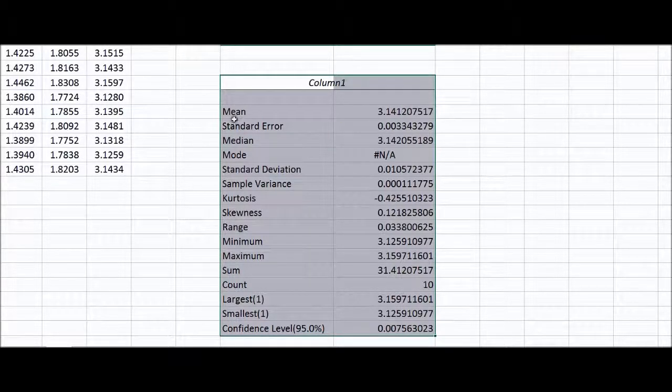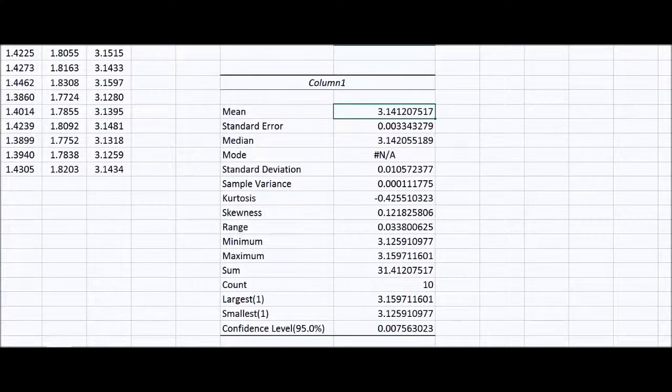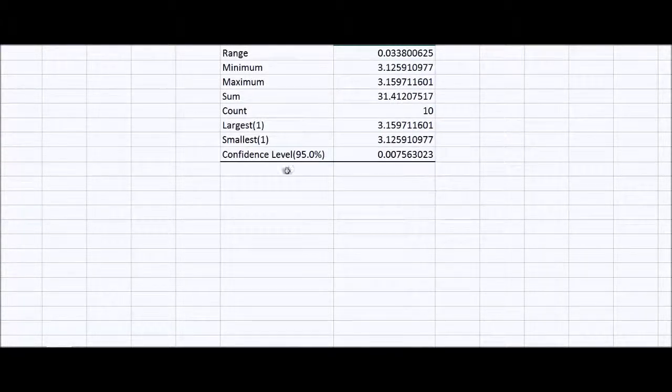The mean is 3.1412. Not bad. Pi is 3.1416. I'm going to just make this a little bit fewer sig figs. And the median is 3.1421.